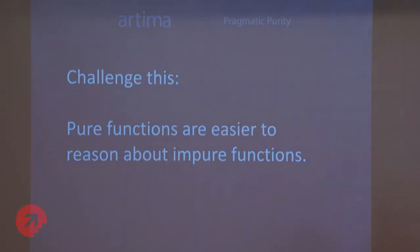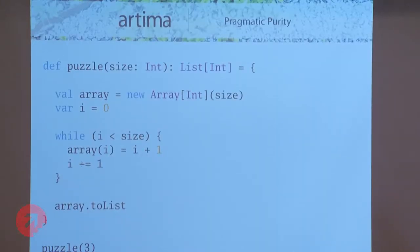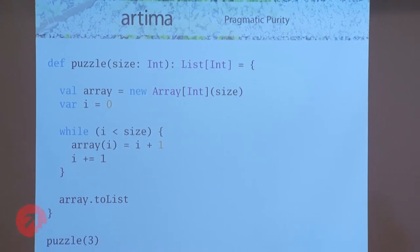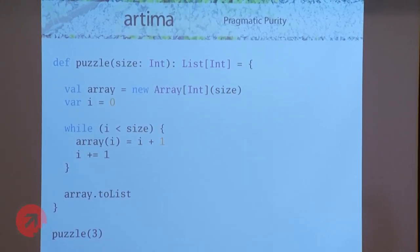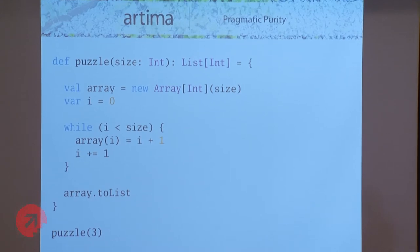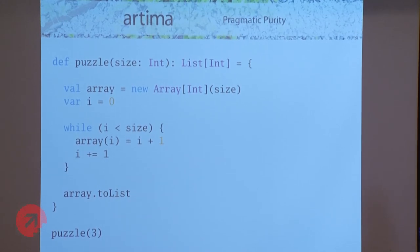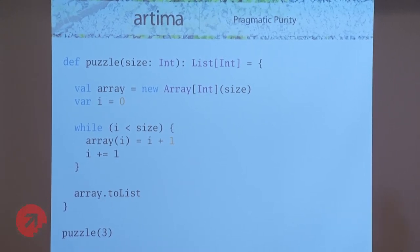I'd like to start with a puzzler, which is this puzzle method which takes an int size and it's going to return a list of int. What it first does is it creates a new array of that size, creates a var initialized to zero. Then there's a while loop that while i is less than the passed size, it mutates the array, putting array[i] = i + 1, then increments i. When that's done, it converts the array to a list and returns it. So the question is: what happens when we call puzzle and pass in three?